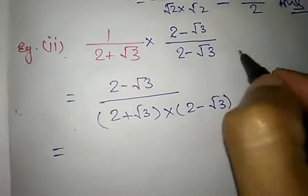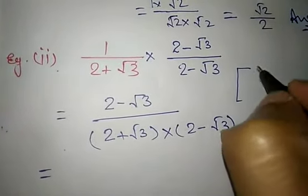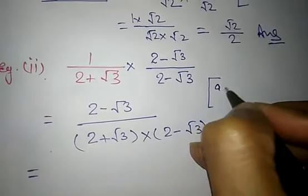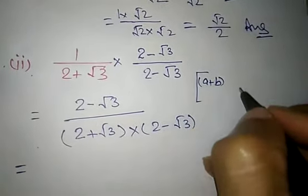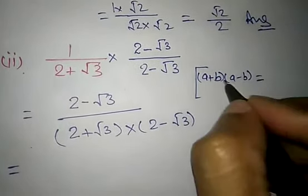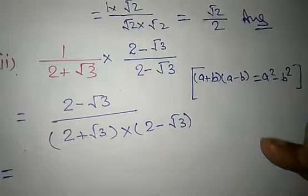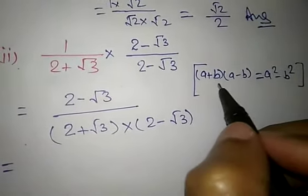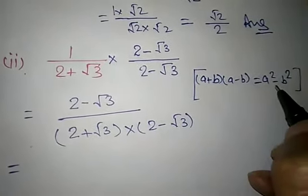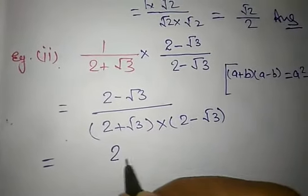In the next step, we use a formula you learned in previous classes. If one bracket has a plus b and the second bracket has a minus b, we get a square minus b square. Please remember this formula. So, using this formula...